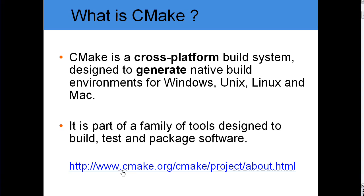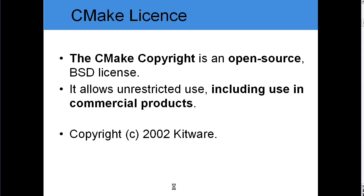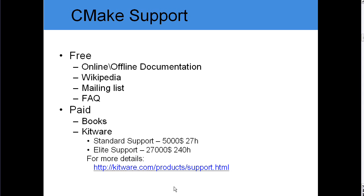For more information, please visit the CMake website. CMake is widely used in large projects, so feel free and safe using it. CMake support provides online and offline documentation. You can visit Wikipedia or register to the mailing list, which is quite responsive and very helpful. You can also get paid support by purchasing books or by contacting Kitware for standard or lite support.